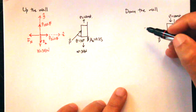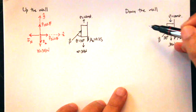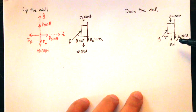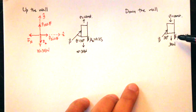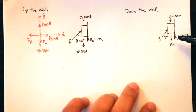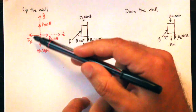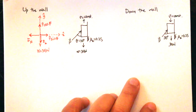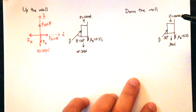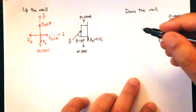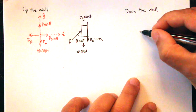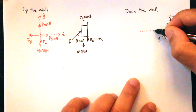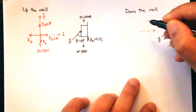Similarly, we can draw the free body diagram for when the block is moving down the wall. Everything is the same except the friction force now points upward, opposing the downward motion.